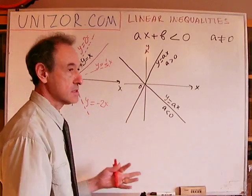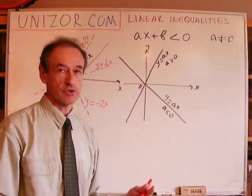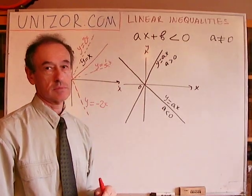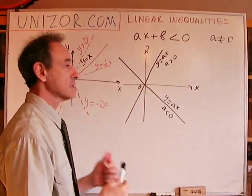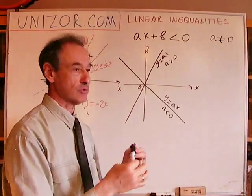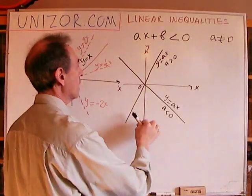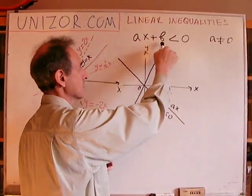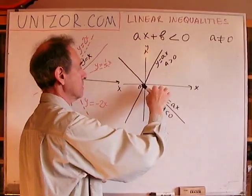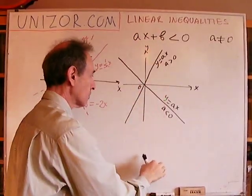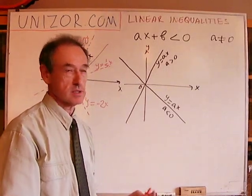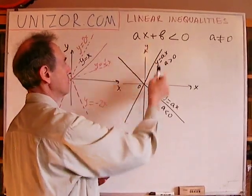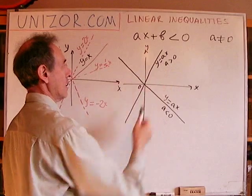Next, what we have to do is add b. Adding b means we move the graph vertically — either upwards if b is positive, or downwards if b is negative. That's how we build the graph of ax plus b from the graph of ax.